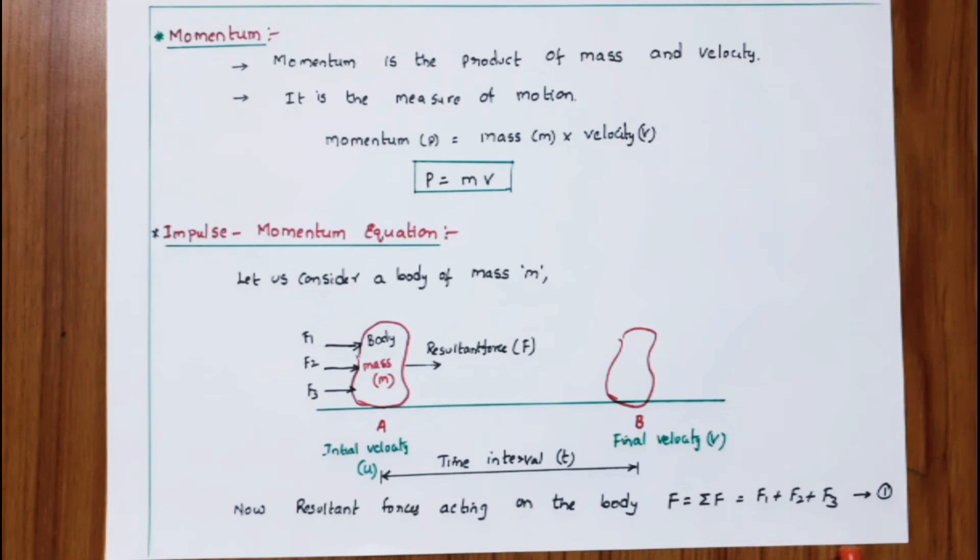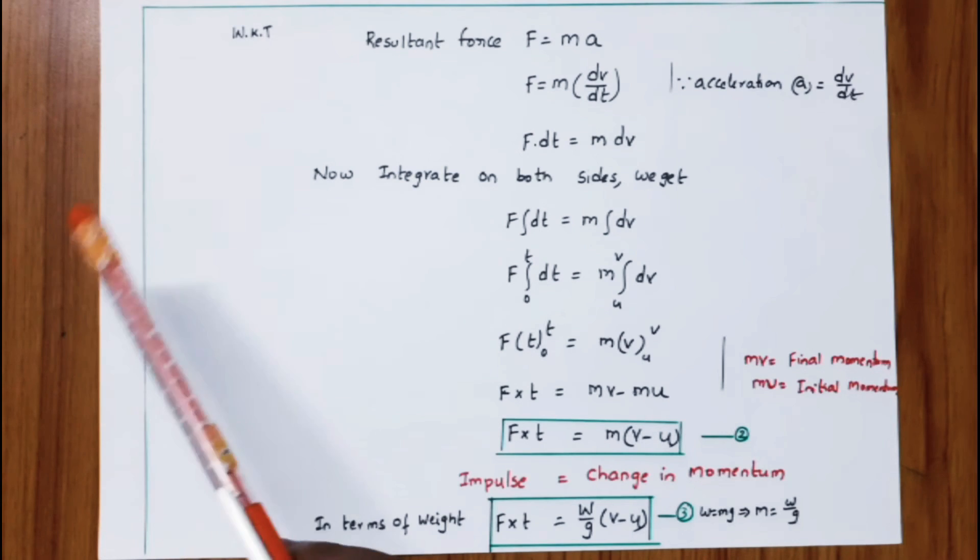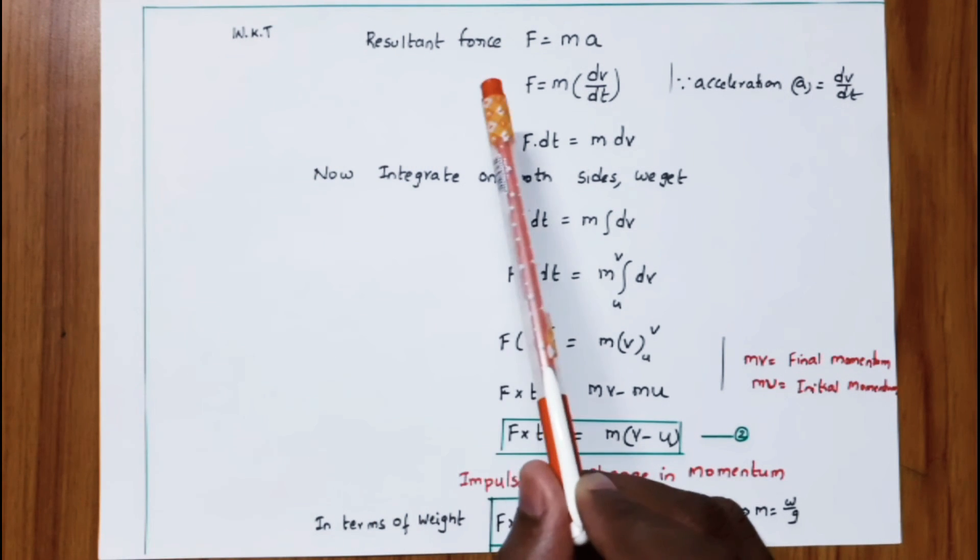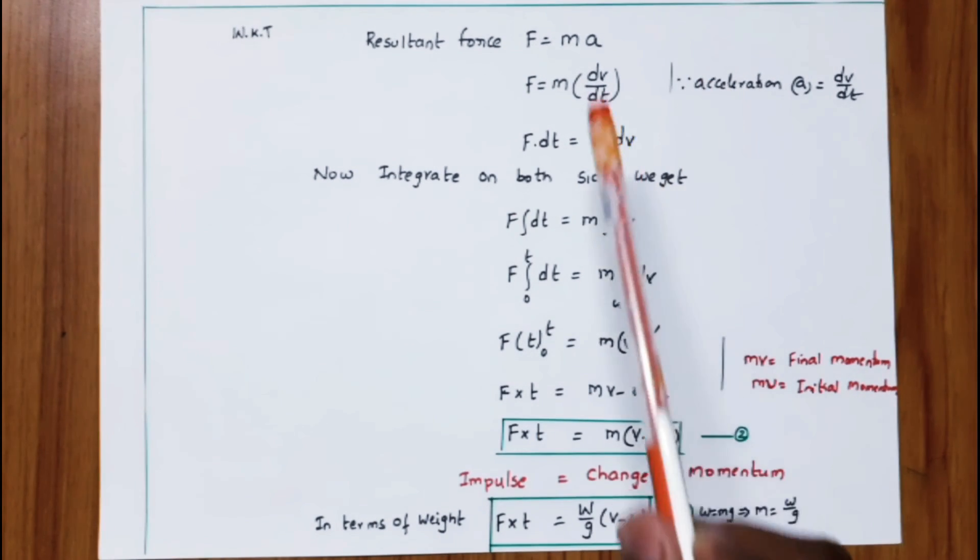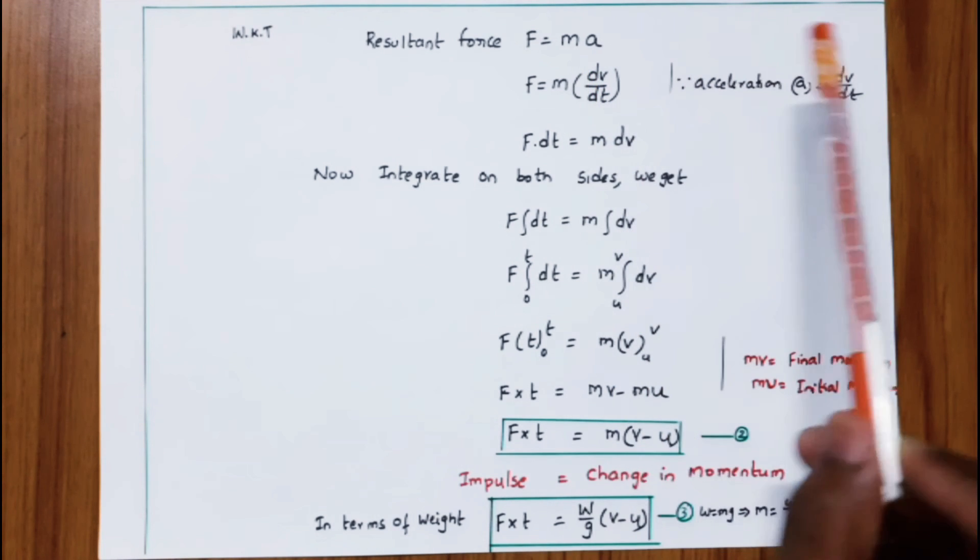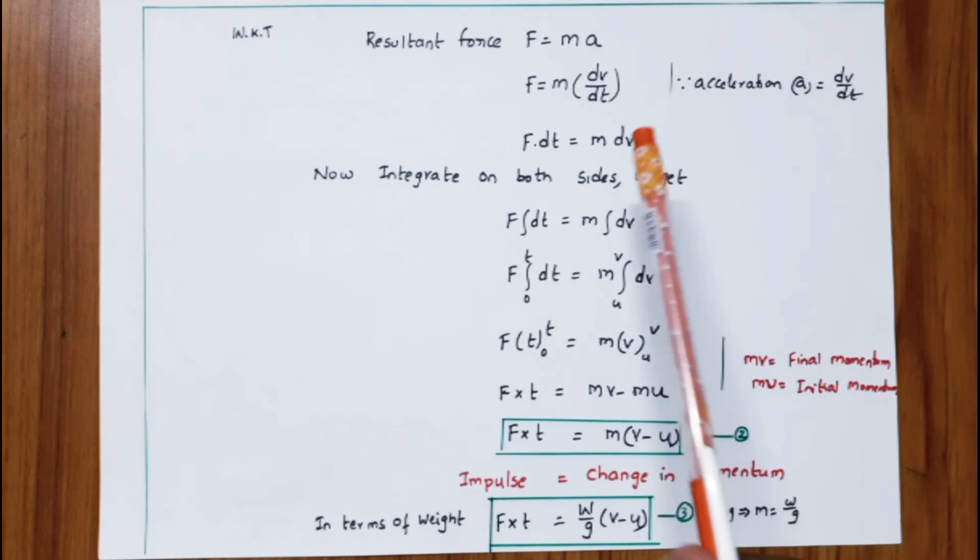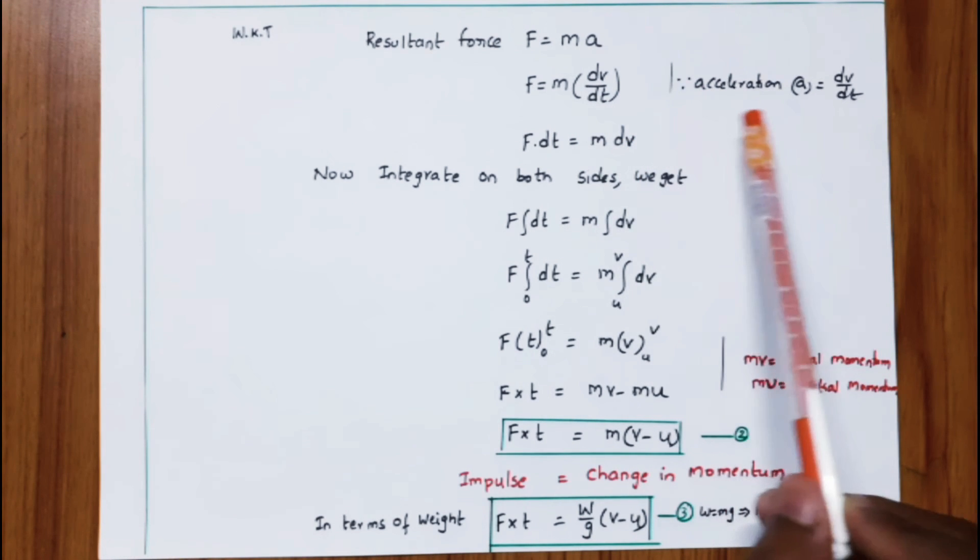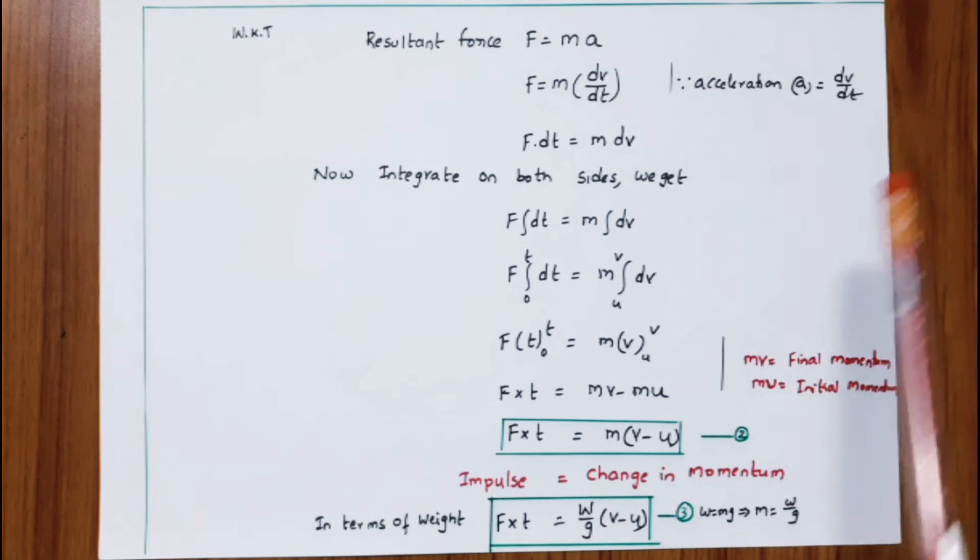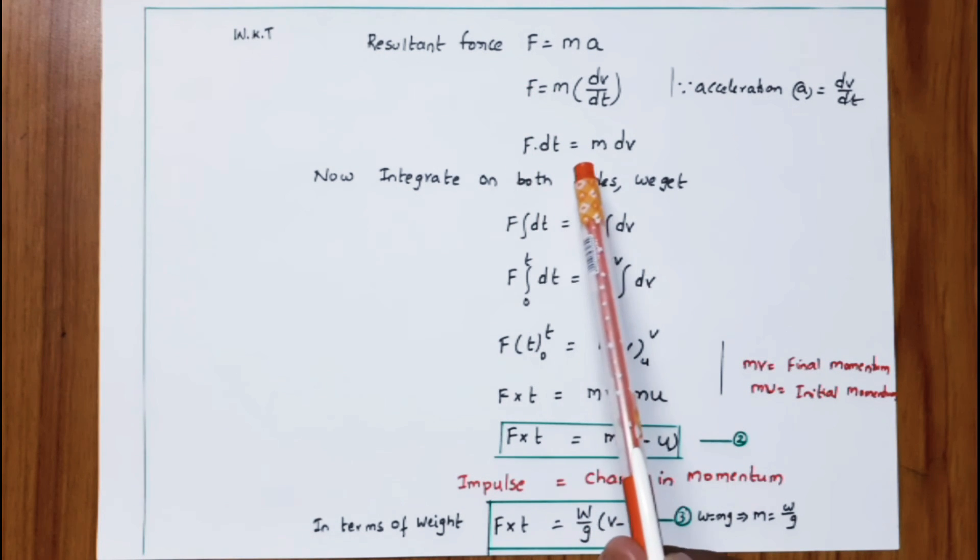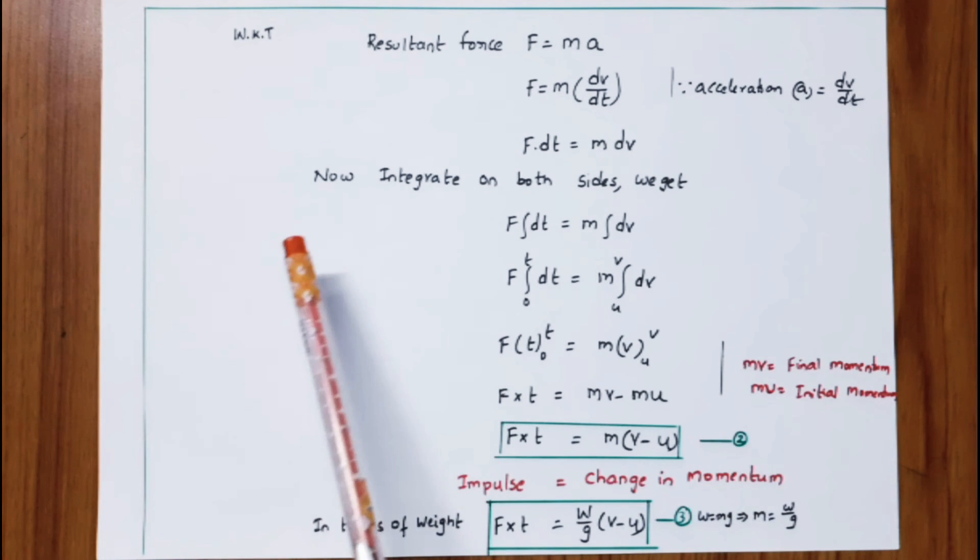From Newton's second law of motion, resultant force F = ma, where m is mass and a is acceleration. So F = m × dv/dt, since acceleration a = dv/dt. Cross-multiplying this equation, F × dt = m × dv.